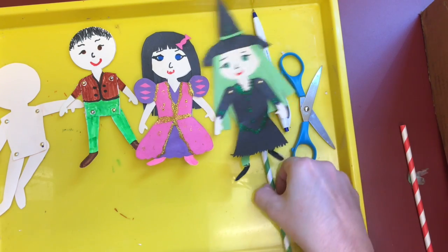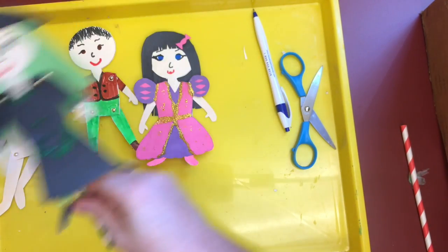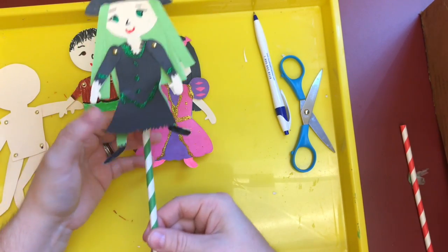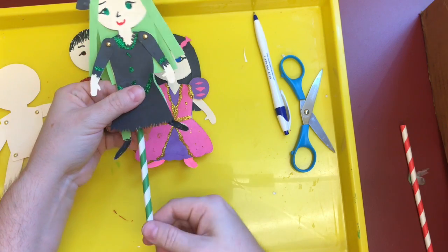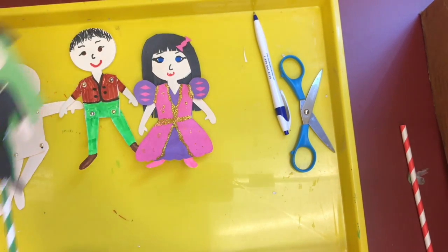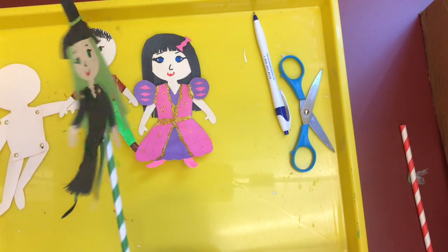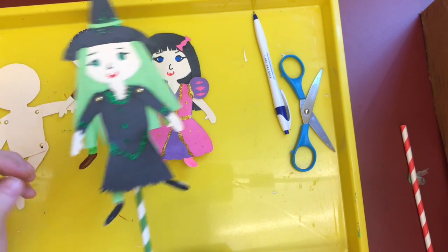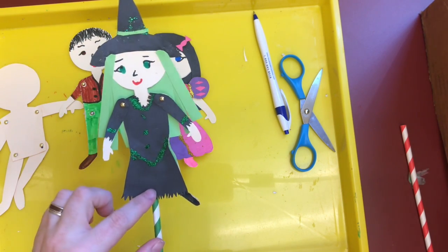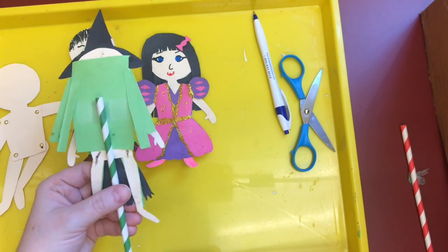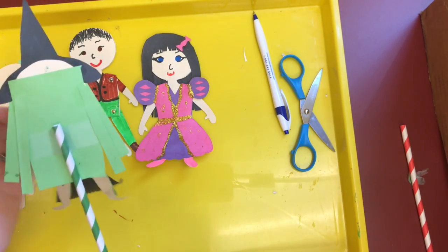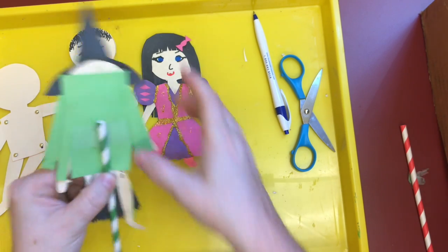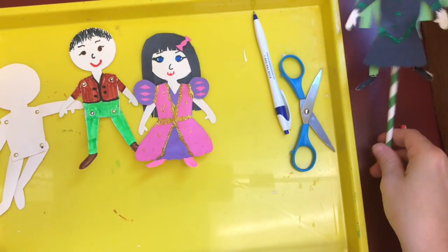But then, if you want to use them as a puppet, how are we going to get them to move around? The first way is you can add this stick and then you can use them like that. Their arms and legs will kind of swing free. To attach the stick, all you do is flip your puppet over to the back and you use some tape or some glue to attach the stick to the puppet's torso. That's an easy way to do it.